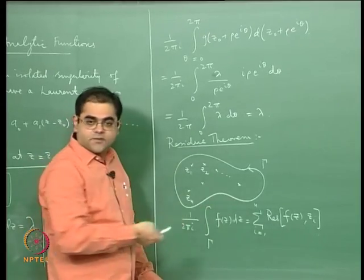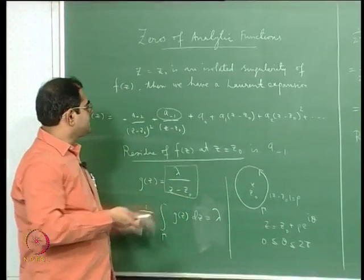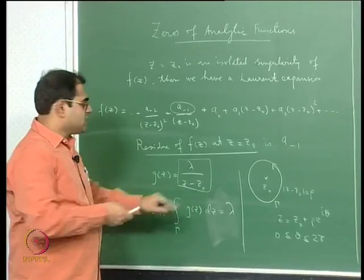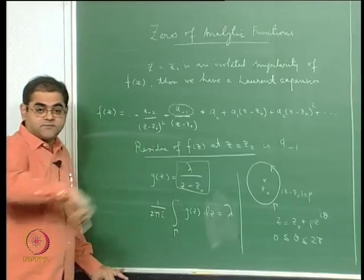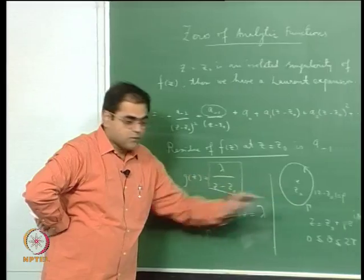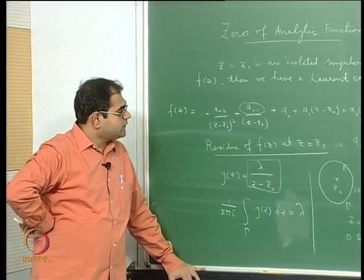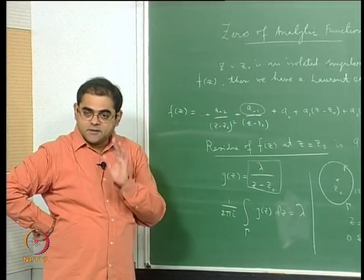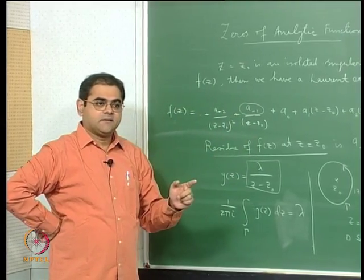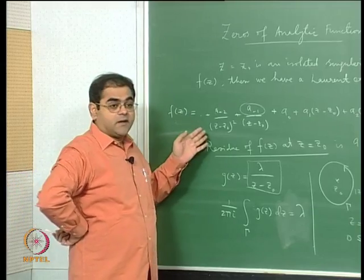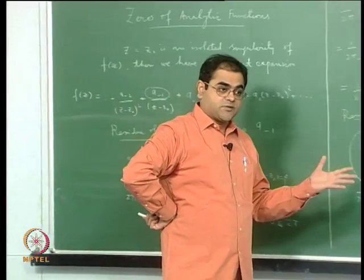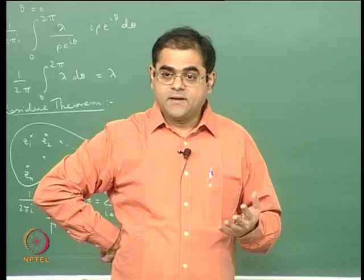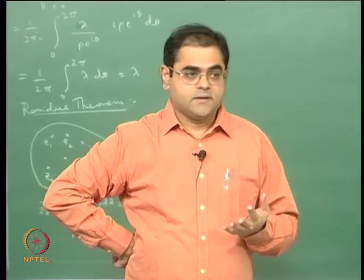This is the so-called residue theorem. You can also see that if you take the Laurent series and integrate it around a contour, the integral of the whole series equals integrating term by term. You can integrate term by term and take the resulting series, and this is correct because you can interchange integration and summation provided the series of functions converges uniformly.